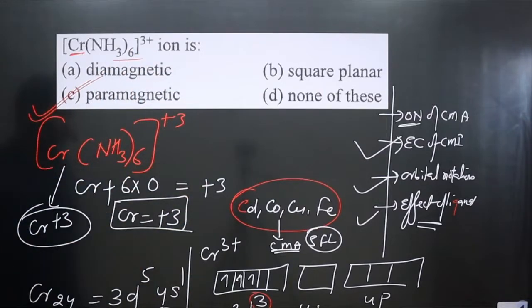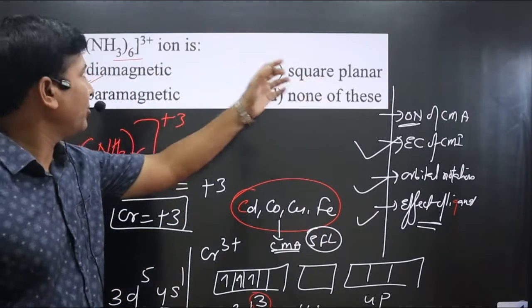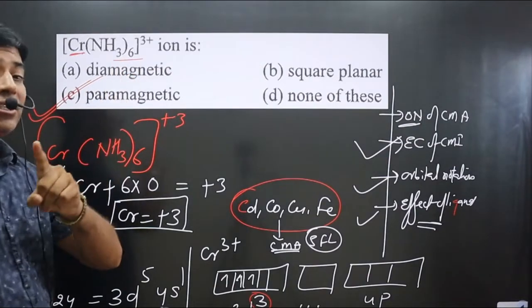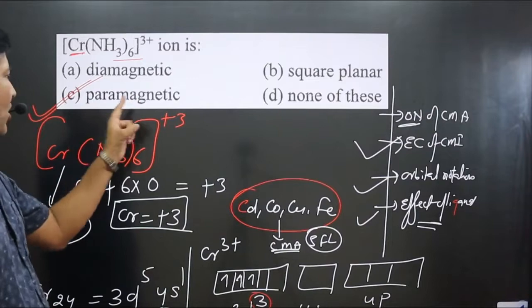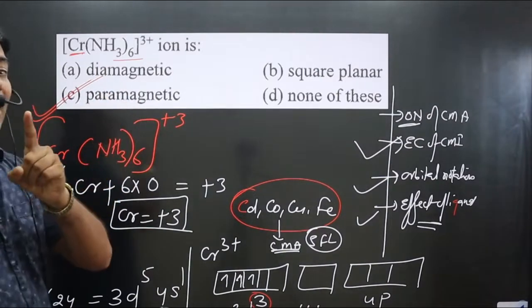Option C is correct. It cannot be square planar because here we have coordination number 6, so it will be obviously octahedral by nature.